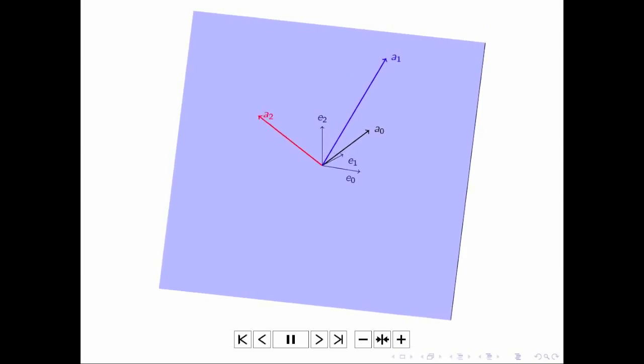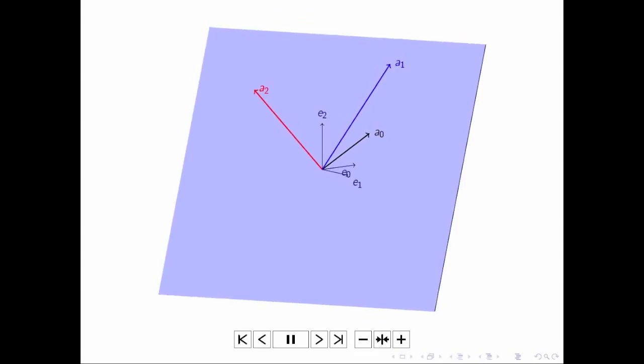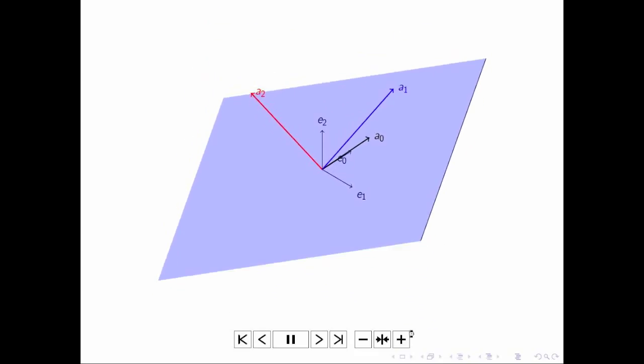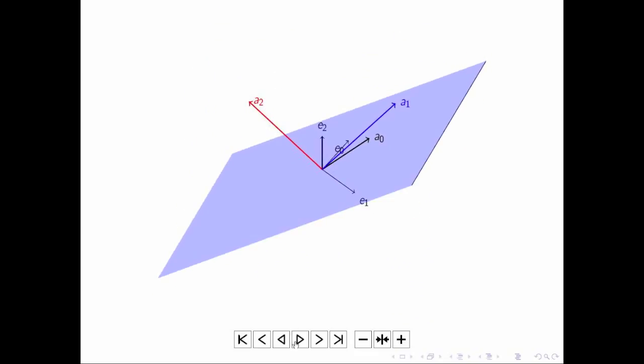And what you notice is that A0 and A1 are in the plane that we colored blue. And then A2 sticks out of that plane, so it's not in the space spanned by the vectors A0, A1. And we also notice that A0 and A1 are not perpendicular to each other. And it's probably a little bit harder to see whether A2 is perpendicular to A0 and A1. We'll have a better look at that later.